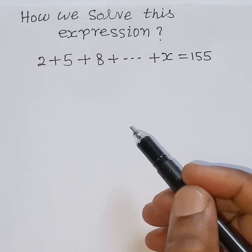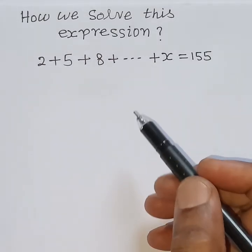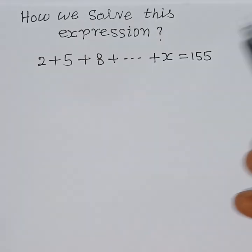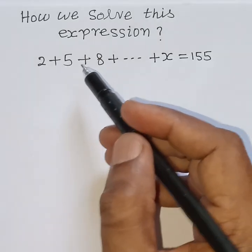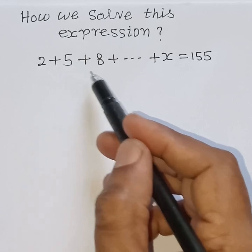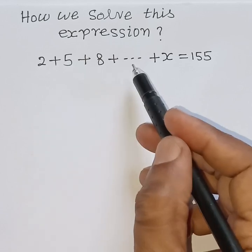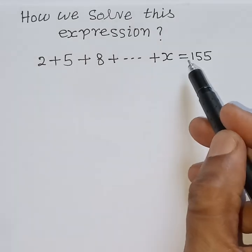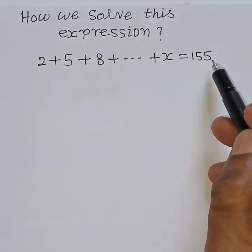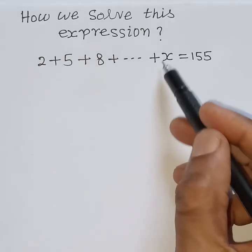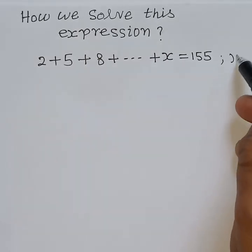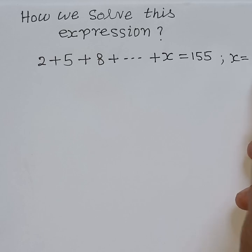Hello friends, welcome back. Solve this expression: 2 plus 5 plus 8 plus dot dot dot plus x is equal to 155. What is the value of x?